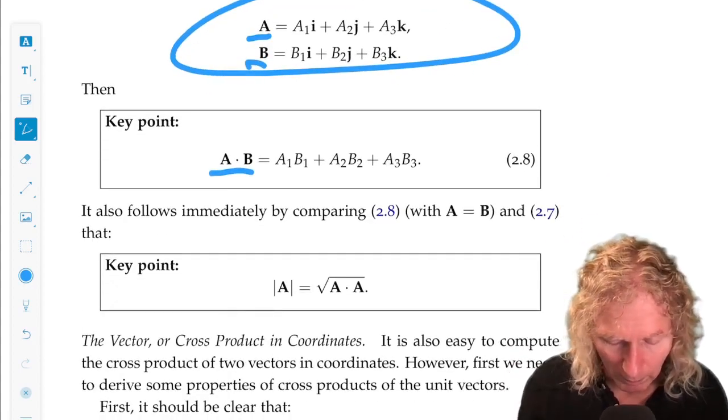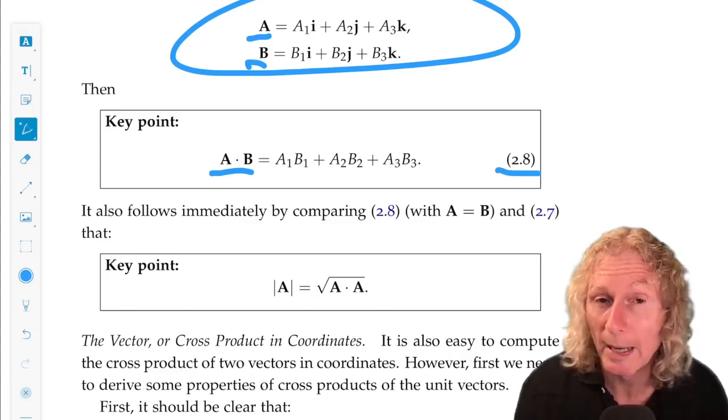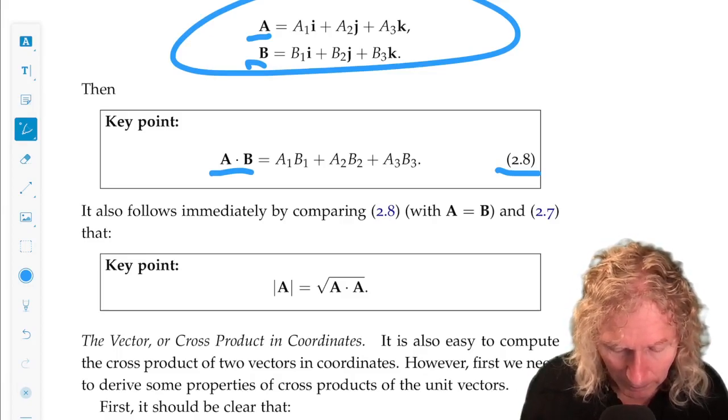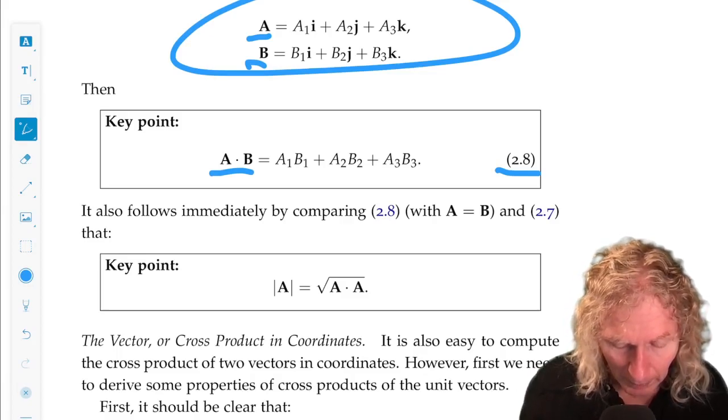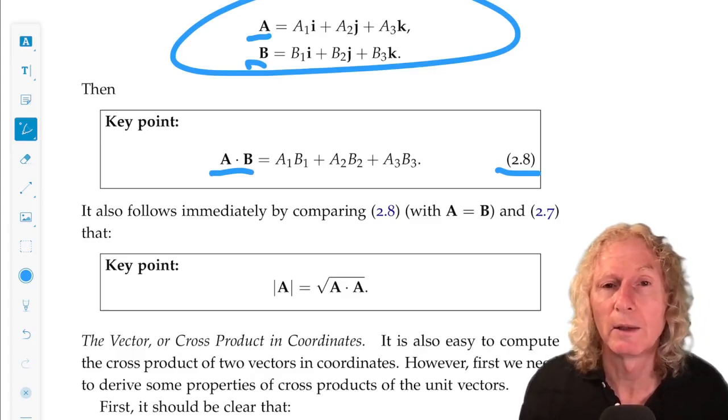Now, if you take this definition and you substitute for B, A, you can easily see that A dot A is the square root of the length of the vector.